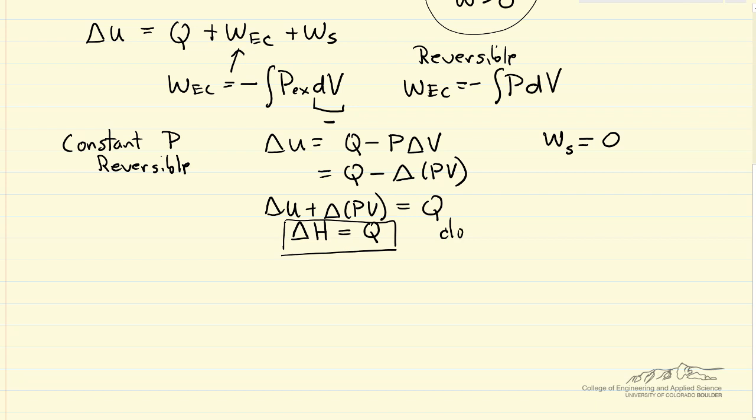We have a closed system, constant pressure, and reversible. The other case would be constant volume, so a fixed volume container. This means there's no expansion compression work, and so delta U equals Q.